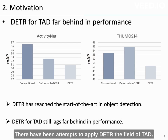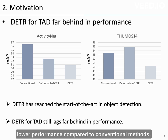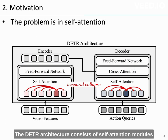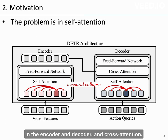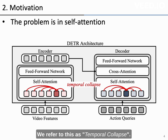There have been attempts to apply DTR to the field of TAD. However, DTR-based methods in TAD still exhibit lower performance compared to conventional methods, particularly when DTR does not utilize deformable attention. The DTR architecture consists of self-attention modules in the encoder and decoder and cross-attention. However, upon examining these self-attention modules, we discovered that attention tends to collapse onto a small number of key elements. We refer to this as temporal collapse.